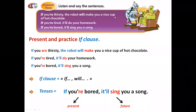So let's take a look at these sentences. The first one: if you are thirsty, the robot will make you a nice cup of hot chocolate. Sentence number two: if you are tired, it'll do your homework — it means it will do your homework. Number three: if you are bored, it'll sing you a song — it means it will sing you a song.